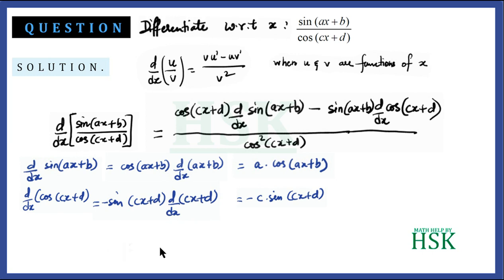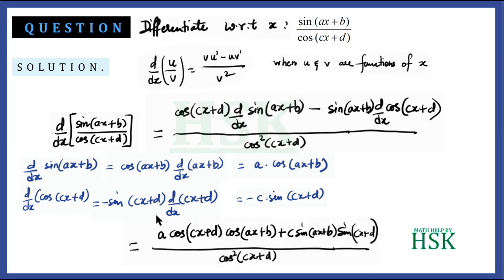Substituting the values: placing d/dx of sin(ax + b) as a·cos(ax + b), the first term in the numerator becomes a·cos(cx + d)·cos(ax + b). Placing d/dx of cos(cx + d) as minus c·sin(cx + d), the minus and minus make plus, giving: plus c·sin(ax + b)·sin(cx + d), with cos²(cx + d) in the denominator.